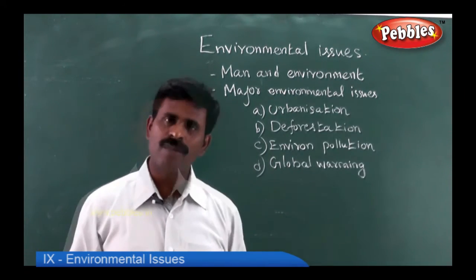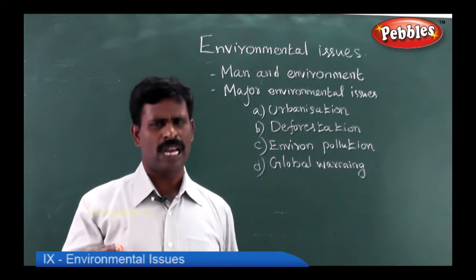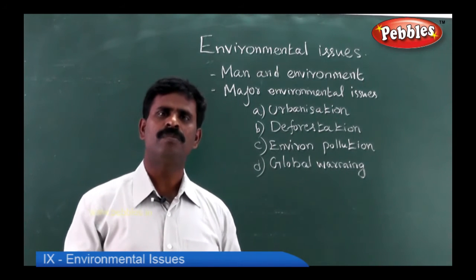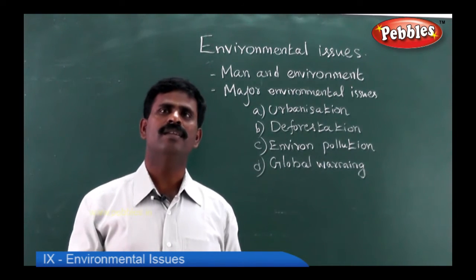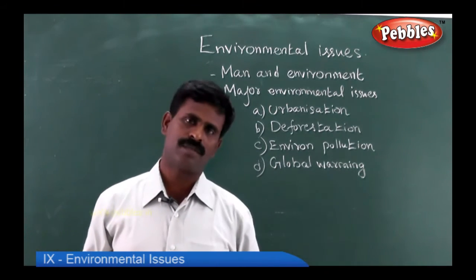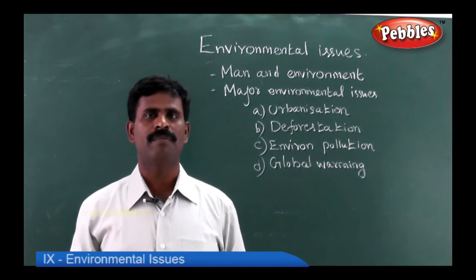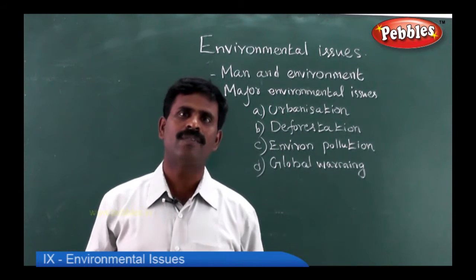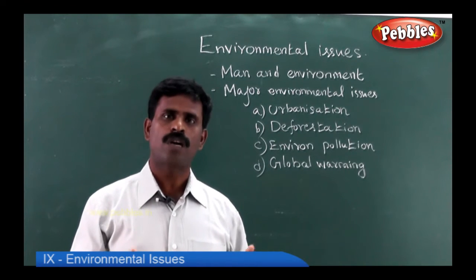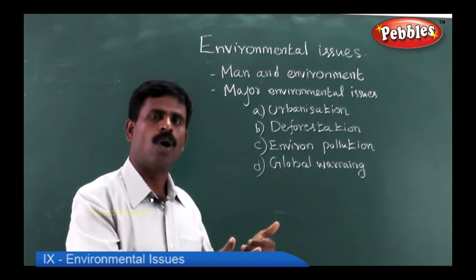An example of urbanization is Kanjivaram. Kanjivaram is very closely located to Chennai, and Kanjivaram and Arakonam are areas that are highly urbanized because of the presence of industries. Urbanization is good, but at the same time people should not leave their native lands to engage themselves in an occupation which is not desirable.